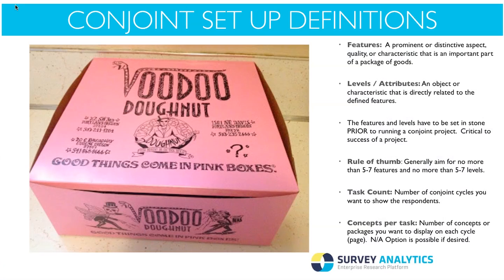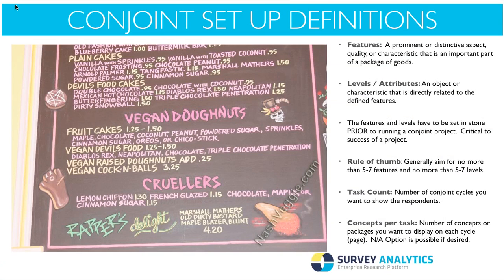Let's look at some conjoint definitions. The first one is features — a prominent or distinctive aspect, quality, or characteristic that is an important part of a package of goods. For example, we're looking at donuts as the features. Within that, we look at the next definition, which is levels or attributes — an object or characteristic defined related to the features. From donuts, you've got flavors like plain cake, double food cake, fruit cake, and also pricing. Levels and features should be set in stone prior to running your conjoint project — it's critical to the success of your project.